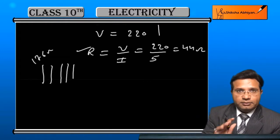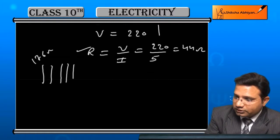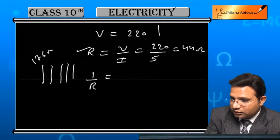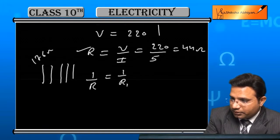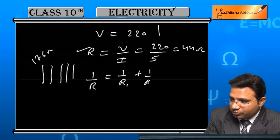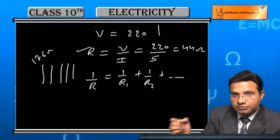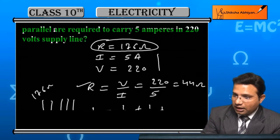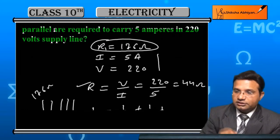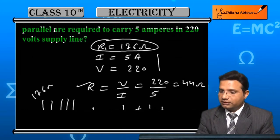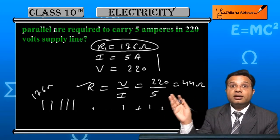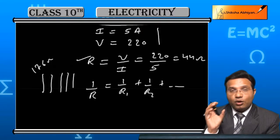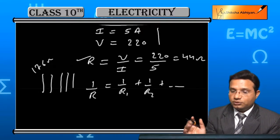For that, it is a parallel combination. For that, we will write formula as 1 by R equals 1 by R1 plus 1 by R2 plus dash dash means many. So, this R1 is actually this 176 ohm. This is R1. R2, R3 all are 176 ohm. We are required to find exact how many these resistors will be used.